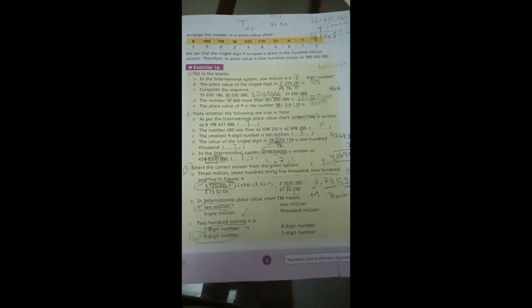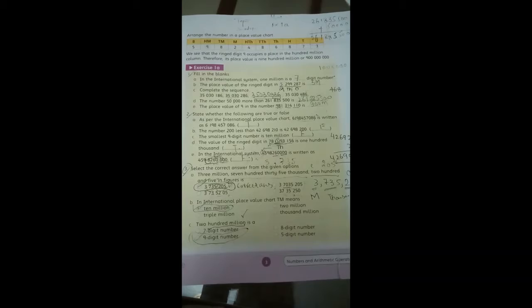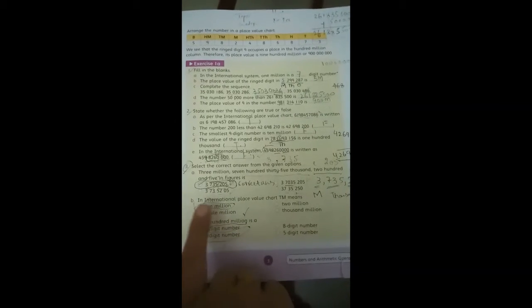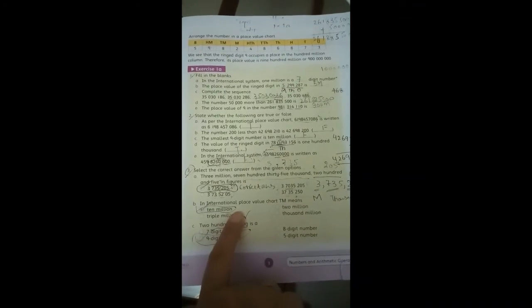TM means 10 million, so you have to circle the option of 10 million.